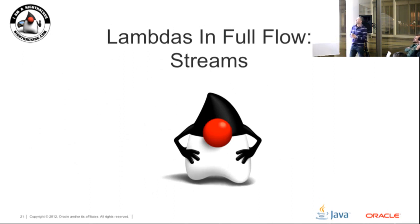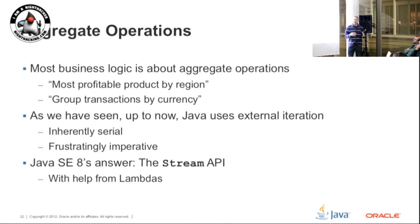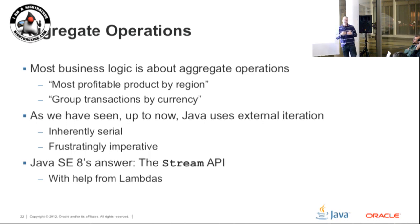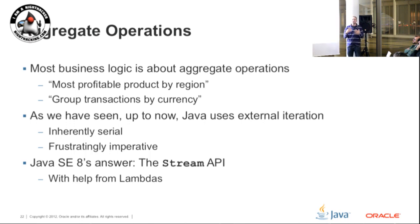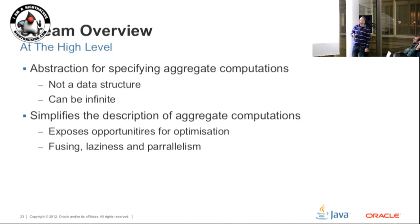Let's look at how we can use lambdas, extension methods, and streams together. We want to add the ability to use filter, map, and reduce so we can do this more functional style of programming. We can now extend the collections API. We're looking to answer questions like finding the most profitable product by region, grouping transactions by currency. Up until now we've tended to use external iteration with explicit loops. In Java SE8, to make our code not inherently serial or parallel, we have the streams API, which works with lambdas.